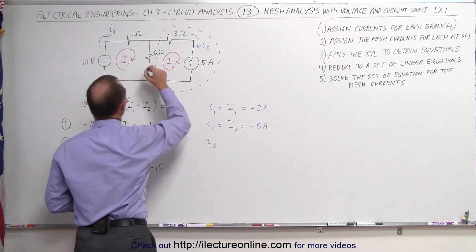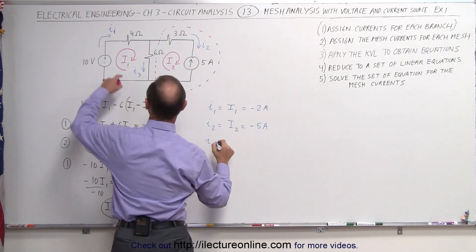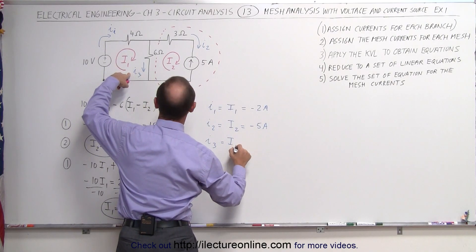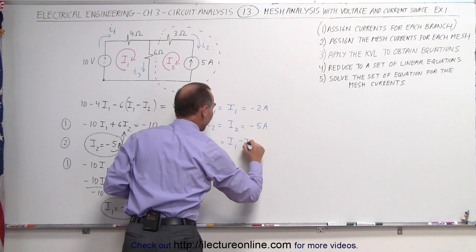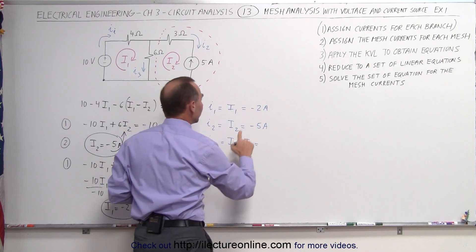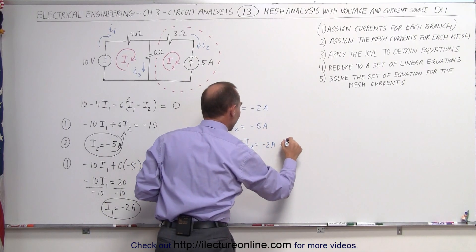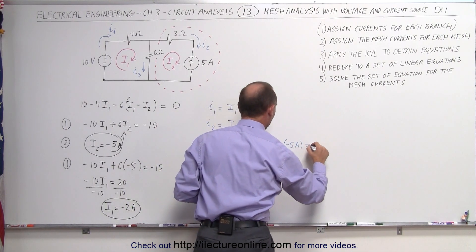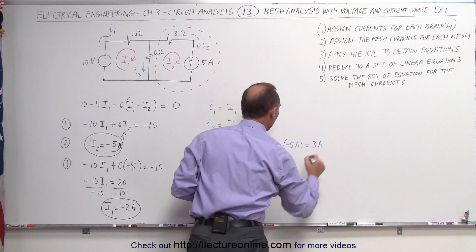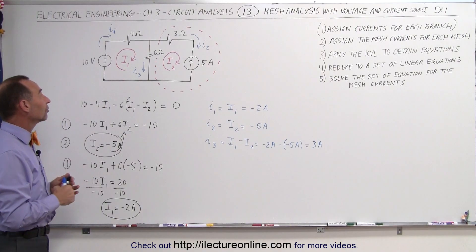And then we have I3. Let's call this I3 in this direction. Notice I3 equals mesh current I1 minus mesh current I2, which is in the opposite direction. I1 is minus 2 amps, I2 is minus 5 amps. We subtract negative 5 amps, that's plus 5, minus 2, which equals positive 3 amps, and we have now determined all three currents in the three branches in the circuit.